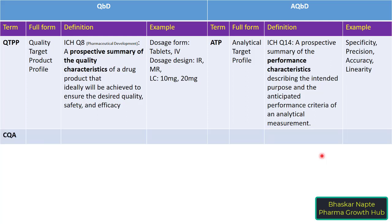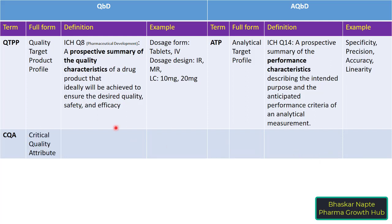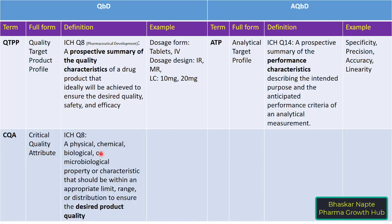The next parameter in QBD is CQA, which stands for Critical Quality Attribute. The definition is: a physical, chemical, biological, or microbiological property or characteristic that should be within an appropriate limit, range, or distribution to ensure the desired product quality.